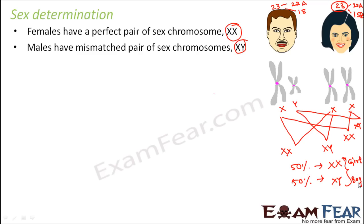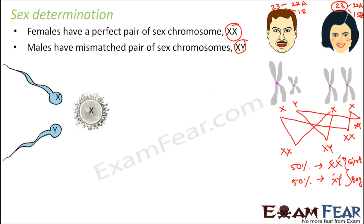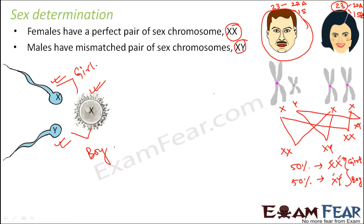Now, in this case, the mother in both cases — whether it is a girl or a boy — X is coming from the mother. So the mother is donating the same thing. But who is donating different things? That is the father. If the father donates Y, it is going to be a boy. If the father donates X, it is going to be a girl. So who determines the sex of the baby? It is not the mother, but the father. The egg will always have X, but the sperm can have either X or Y. So a father determines whether the child will be a baby girl or a baby boy.